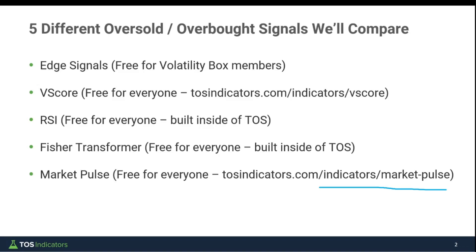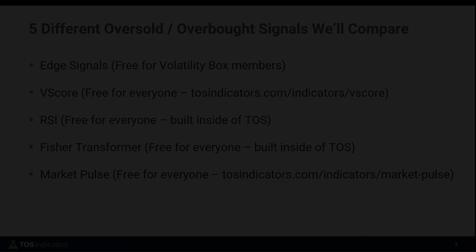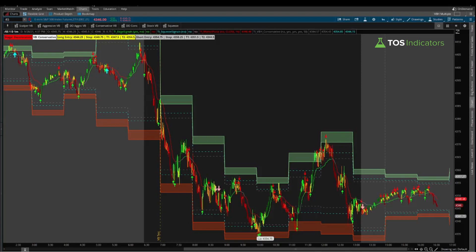For all five indicators we're going to be using the Volatility Box on the S&P as our static scenario to figure out which signal was most effective in helping us capture reversals. Here I have a chart of the S&P 500 off of the conservative Volatility Box model, which is the one we were using today to start off the morning.